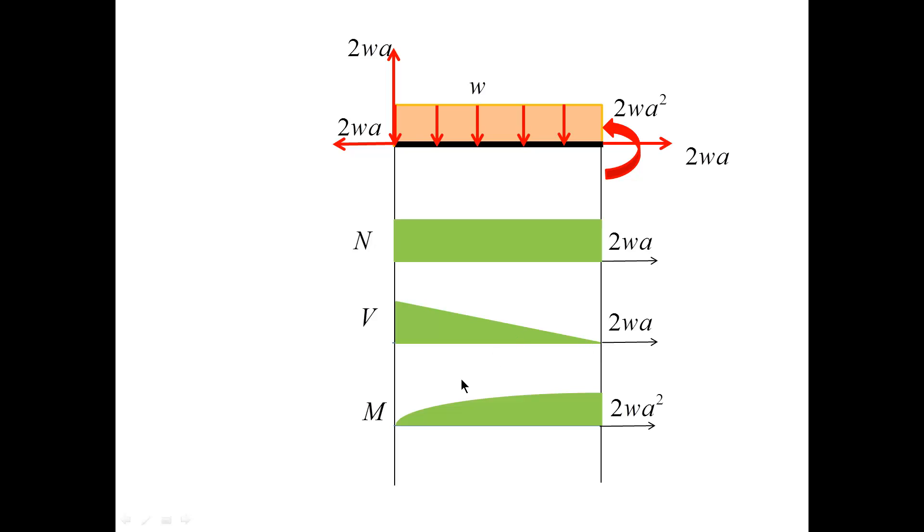The moment diagram starts with 0. Here is a hinge, and then it increases. The slope decreases, and it becomes flat at the right end.